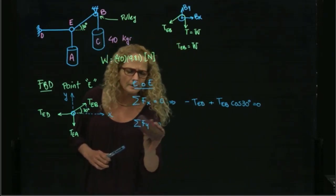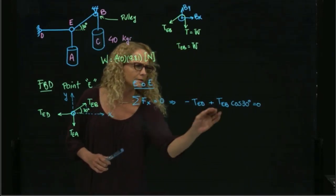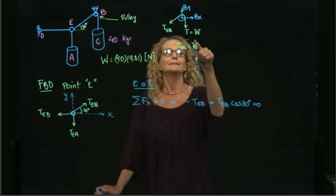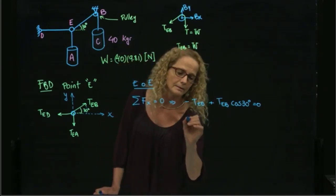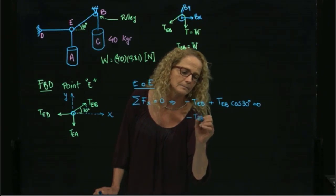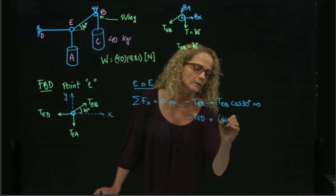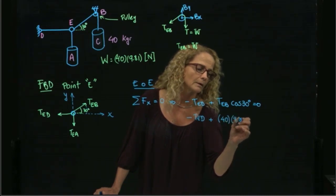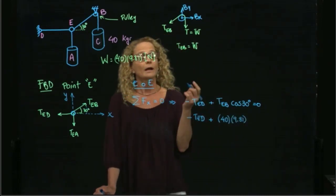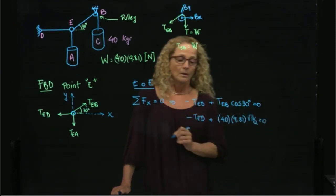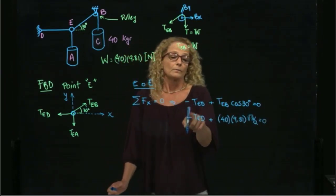Let me draw this a little bit because I am going to extend this one right here. So this is an unknown, and this one we already said that is equal to y, so let me write it this way. T Eb plus the weight, which we said is 40 times 9.81, and we know that the cosine of 30 is square root of 3 over 2. That allows us to find already T Eb.